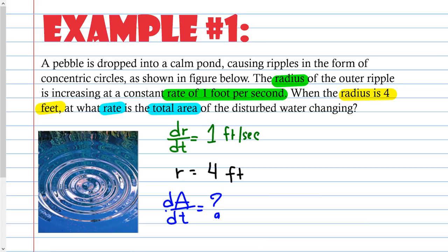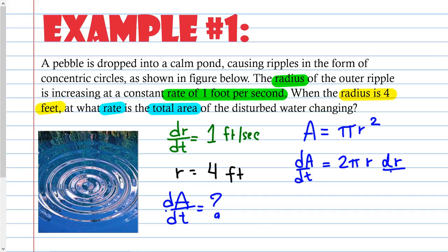Area of a circle is πr². Remember, pi is a constant, so you're going to derive this. Deriving A gets me dA/dt — the same way that y gets me dy/dx. And then 2 times pi, and then r to the first, because I am deriving with respect to time but r is clearly not t, so I need to do the chain rule: dr/dt. So here's my derivative with respect to t: dA/dt = 2πr · dr/dt.